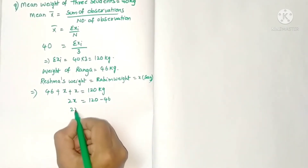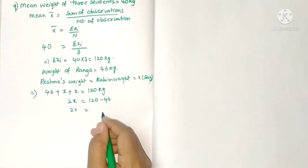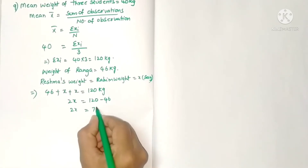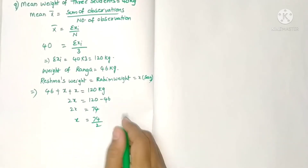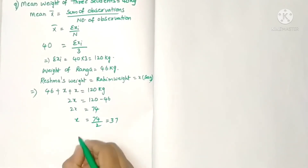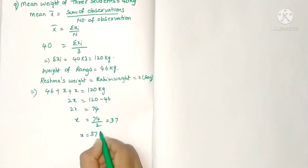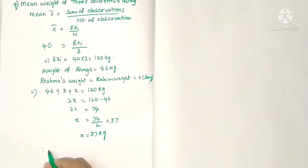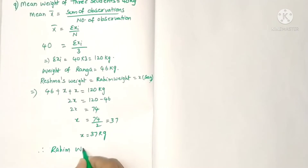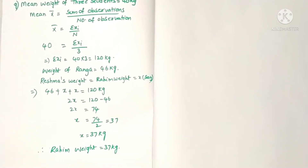So x plus x gives 2x. Transposing 46, we get 2x equals 120 minus 46, which is 74. Therefore x equals 74 by 2, which is 37. So x equals 37 kg. Since the problem asks for Rahim's weight, therefore Rahim's weight is equal to 37 kg.